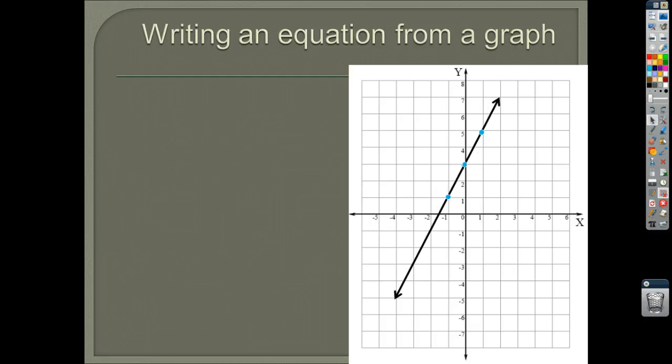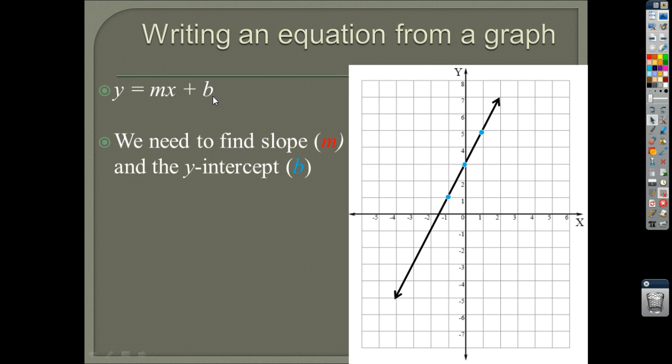This is what we did before. We graphed equations. Now we're going to write equations, and we're going to say why. So one of the reasons you could do it is so you can model distances and rates of change. Alright, so let's write an equation from a graph. Here's an equation, or a line. So we're going to take the information from this graph and we're going to put it into an equation. So we're just going to reverse what we were doing before.